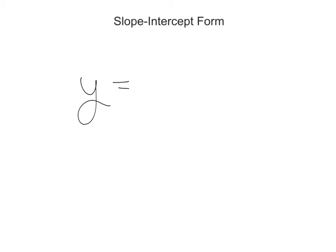y, our standard variable, is equal to m, which stands for slope, x, our standard variable, plus b, what we call the y-intercept. And I'll explain more about what the y-intercept means in a second, but let me talk about what all of these things mean.